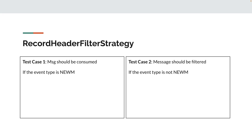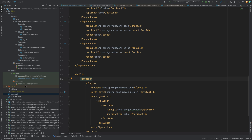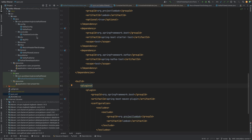So today's test case from the last video: we have a record filter strategy and we want to test that record header filter strategy for these two test cases. Let's directly dive into the code. I already have a running setup and this is the same project described in the last video.